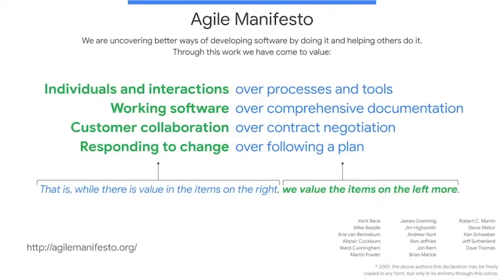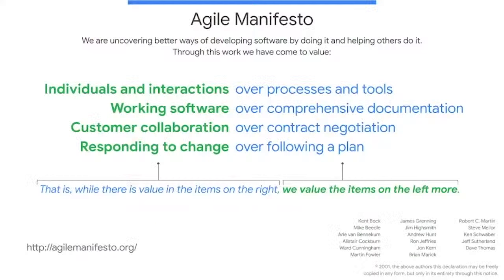The Manifesto for Agile Software Development states: We are uncovering better ways of developing software by doing it and helping others do it. Through this work, we have come to value individuals and interactions over processes and tools, working software over comprehensive documentation, customer collaboration over contract negotiation, responding to change over following a plan. That is, while there is value in the items on the right, we value the items on the left more. The Manifesto is saying that it's helpful for every Agile team to think about both sides of each statement during execution of a project, but should find ways to ensure they're always placing more value and emphasis on the things on the left over the things on the right.